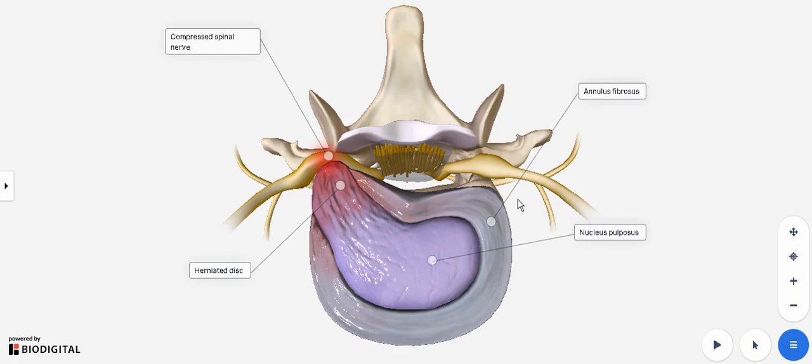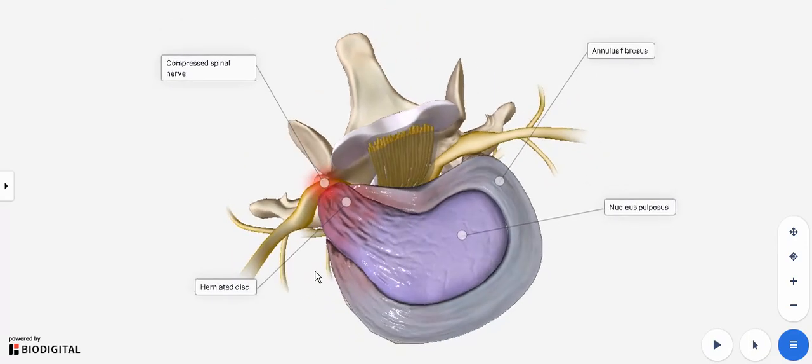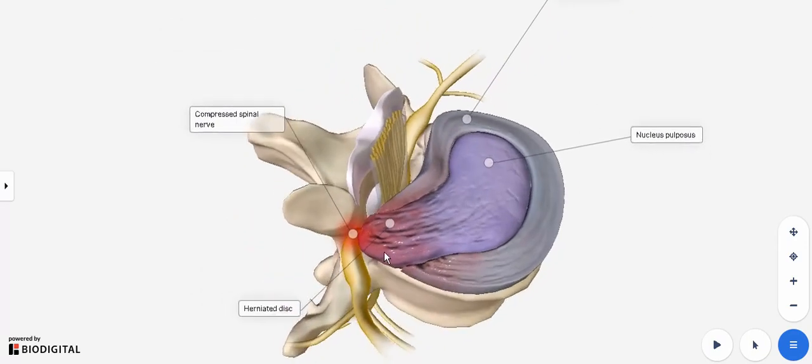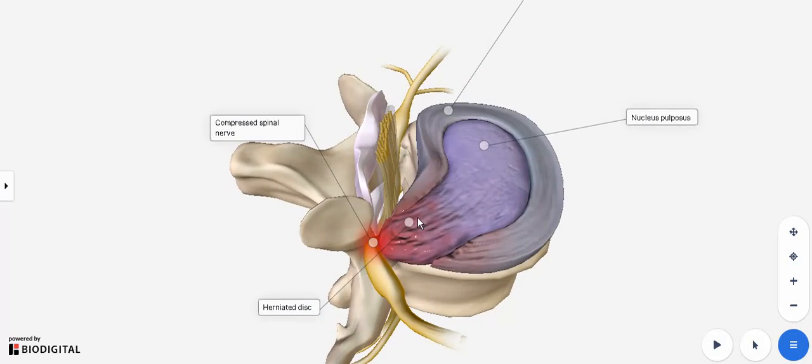Resuming where we left off, this is an excellent model showing a ruptured annulus fibrosis with the herniated nucleus pulposus. Commonly we call this in layman's terms a disc slip.